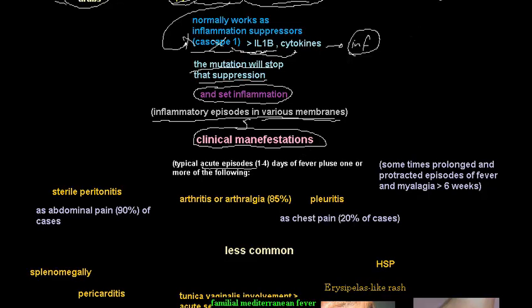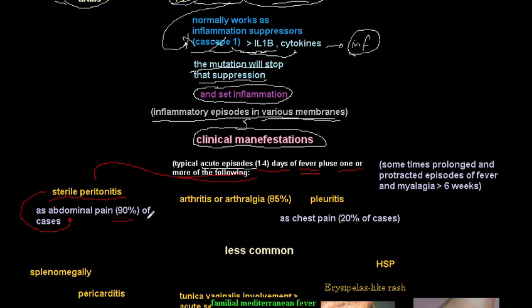Typically, acute episodes of FMF last about one to four days and fever is almost always present. In addition to fever, patients have one or more of the following. Inflammation of the peritoneal membrane leads to sterile peritonitis, which presents as abdominal pain — occurring in 90% of cases during acute attacks.